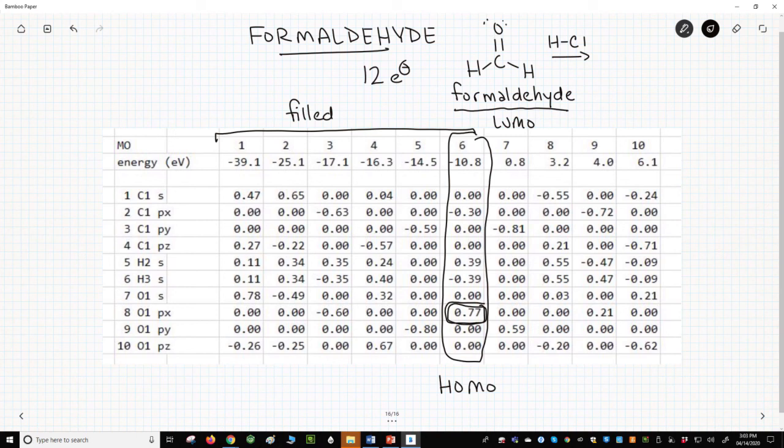It corresponds to the oxygen atom. The large coefficient on the oxygen indicates that the electrons in the HOMO reside largely on the oxygen atom. That's our answer. Protonation of formaldehyde will occur through the HOMO at the oxygen.